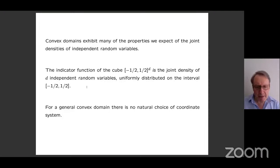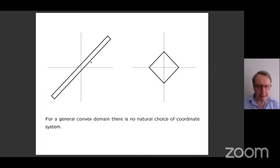But of course, for a more general convex domain, you don't have a natural choice of coordinate system the way you do for the cube. For example, if we were given a rectangle in the plane and you pick the directions at 45 degrees — the x equals y and x equals minus y directions — then the marginals in those directions are independent. But if you pick the ordinary xy coordinates, then they're very far from independent; they're almost identical on this set.